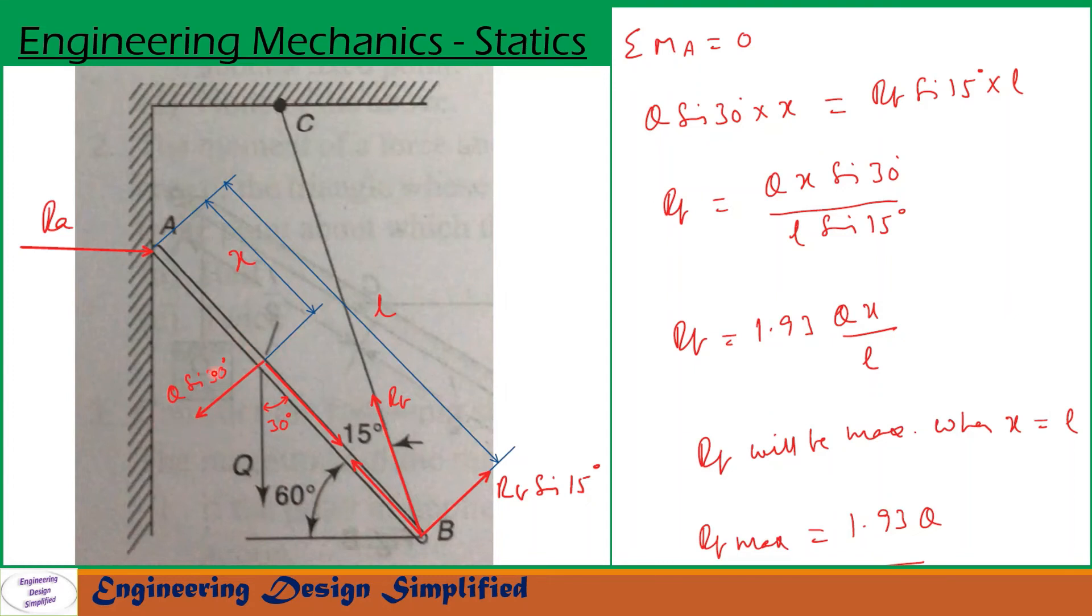So the moment due to Q sin 30 will be Q sin 30 into x that will be a clockwise direction and moment due to RB sin 15 will be RB sin 15 into the length L that will be counterclockwise direction. So these two moments must be equal. So here we have written Q sin 30 into x equal to RB sin 15 into L. So after rearranging this we get RB equal to Q x sin 30 by L sin 15.